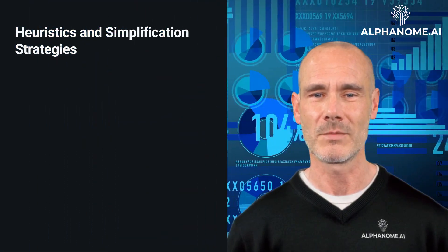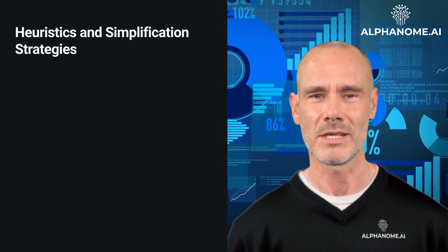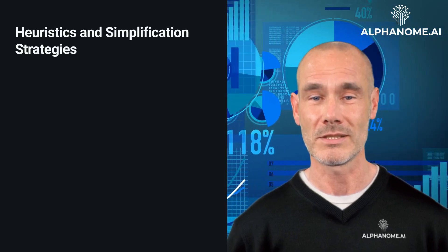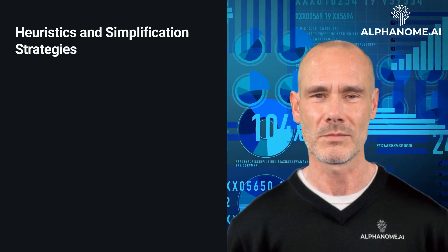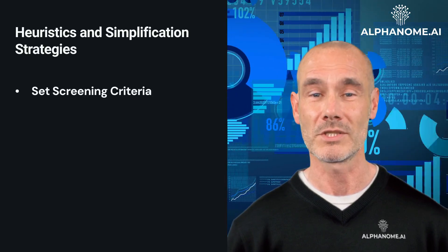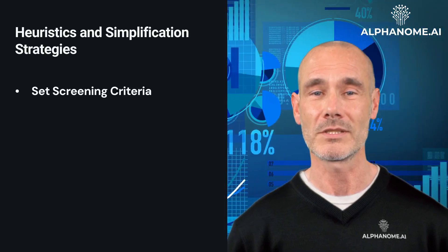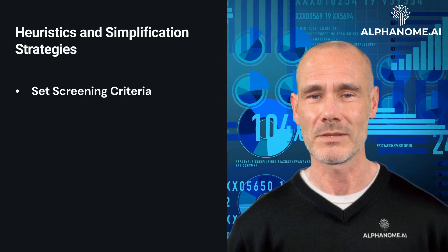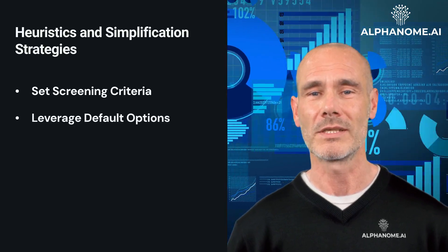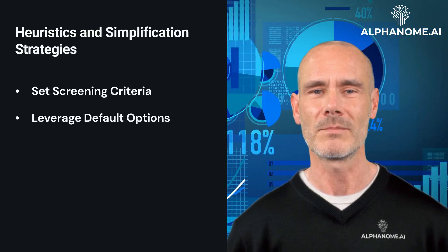Heuristics and Simplification Strategies: To counter the detriments of choice overload, investors should adopt simplifying mental models, rules, and shortcuts. Some potential strategies include: Set Screening Criteria — narrow options by predefining must-have characteristics like risk tolerance, tax implications, cost limits, etc. Leverage Default Options — when overloaded, a reasonable approach is sticking with standard default allocations like target-date retirement funds.